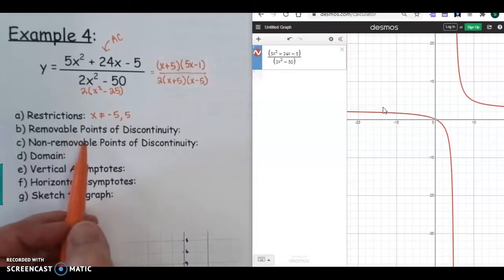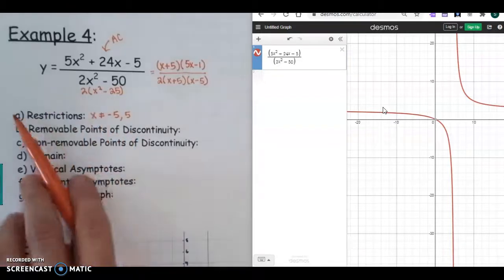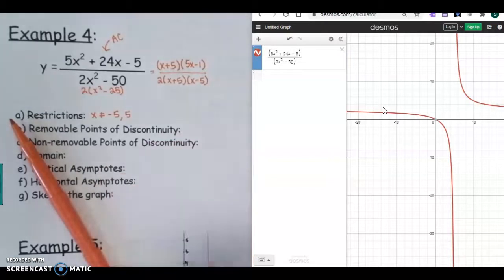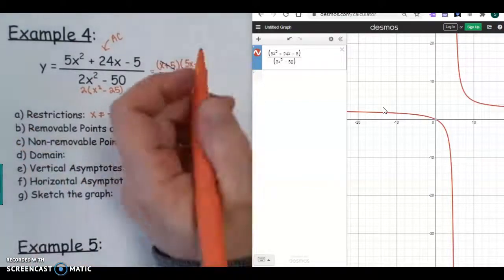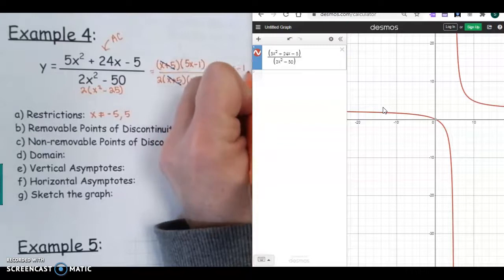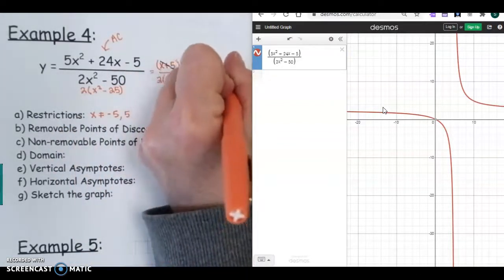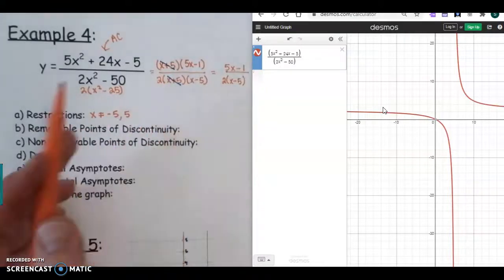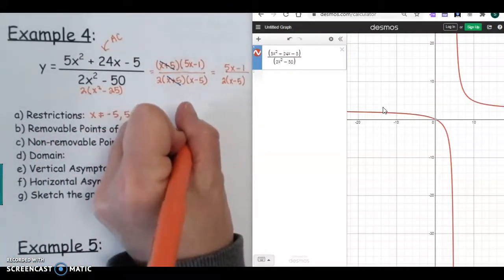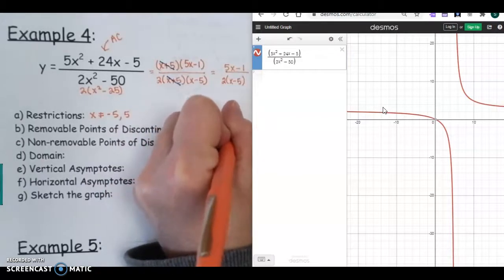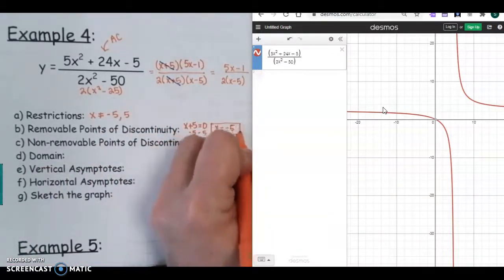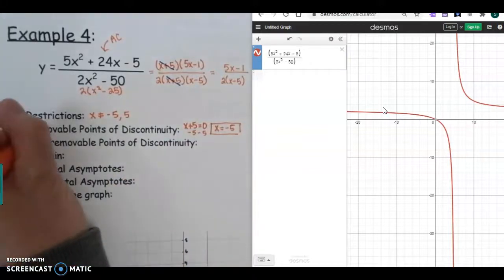Remember, your points of discontinuity are going to be your restrictions. So removable is the ones that you're going to cross out. So if we go back up here and we look, we've got an X + 5 and an X + 5 that we can cross out. So this is going to simplify to (5X - 1) over 2(X - 5). So the one that I crossed out was X + 5, so you're going to set that equal to 0 and solve it. So you would subtract your 5, and X = -5 is going to be your removable point of discontinuity. And remember, removable is the hole in the graph.